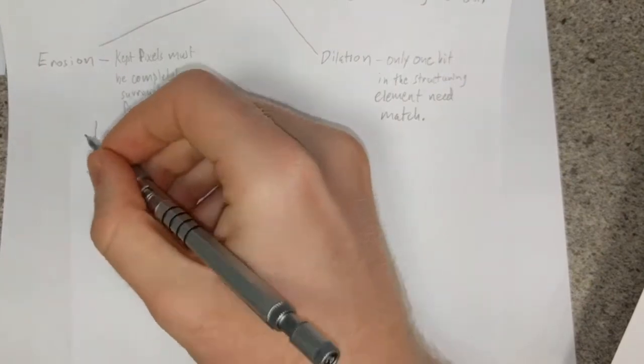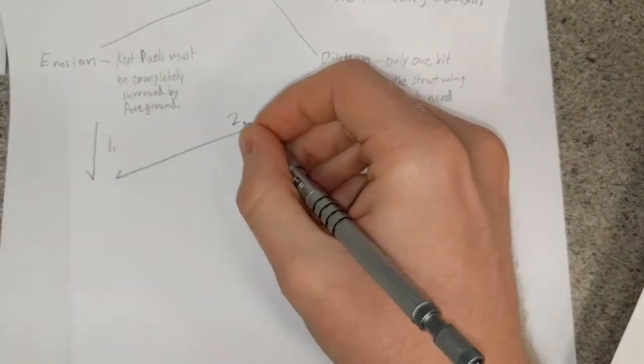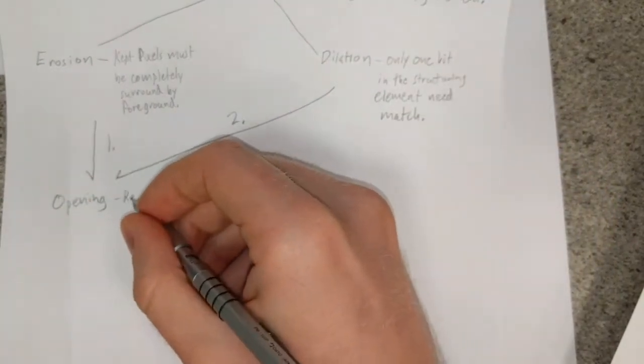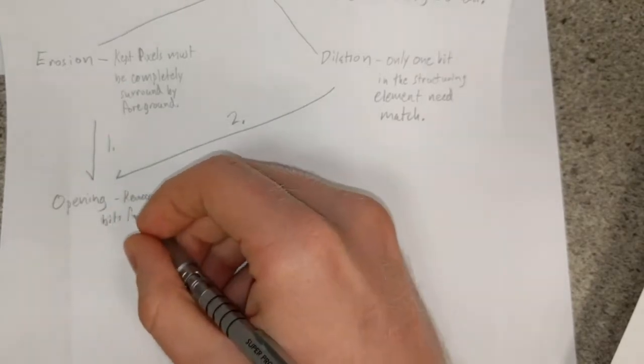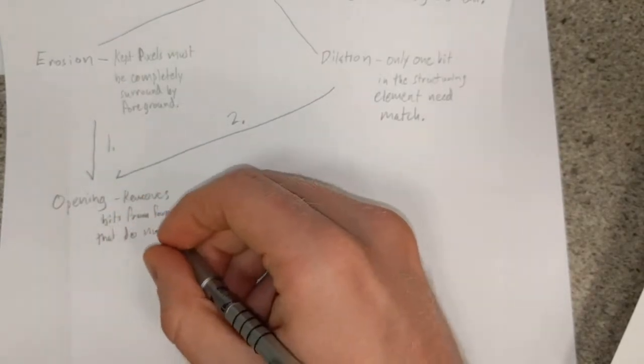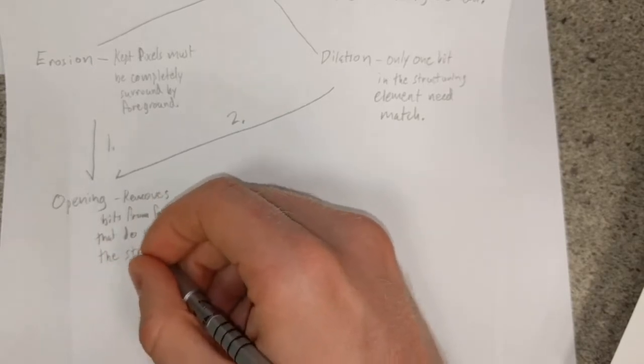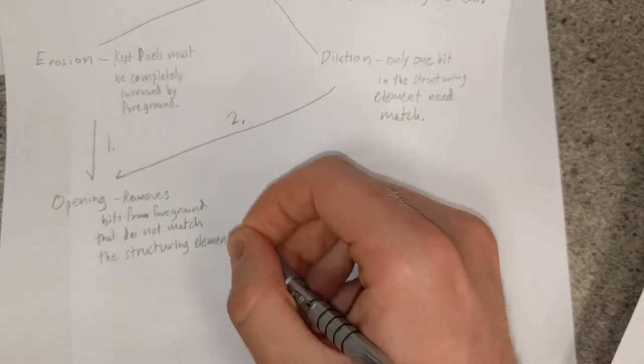From these two operations, we derive two more operations, opening and closing. Opening an image involves dilating an eroded image. This removes bits from the foreground that do not match the morphological operator pattern.